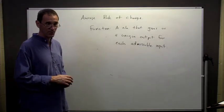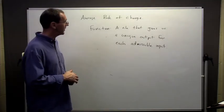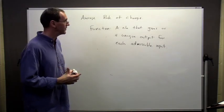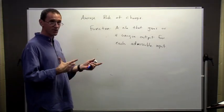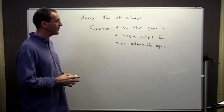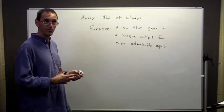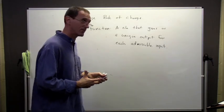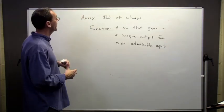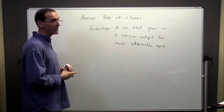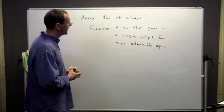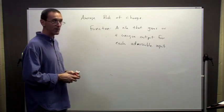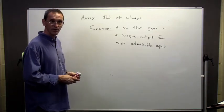We've seen the definition of function, we've talked about change in the context of linear equations and the slope of linear relationships. Now we're going to talk about this in more general terms — we're going to expand this idea of slope. We're going to define something called the average rate of change, talk about what we mean by change in two different ways, and then give an example.